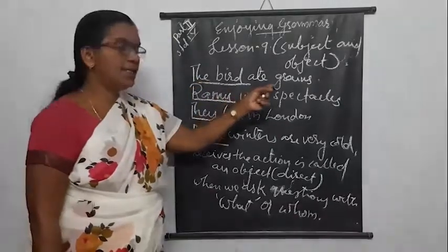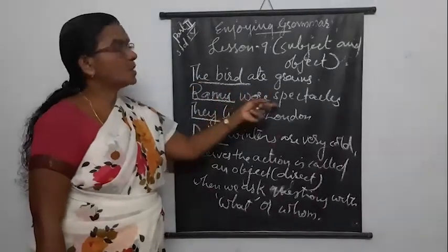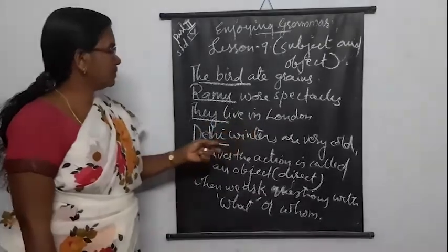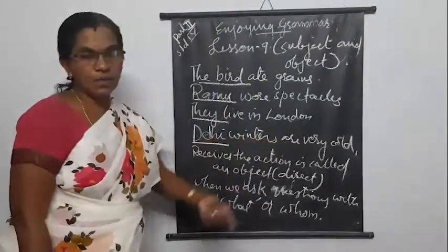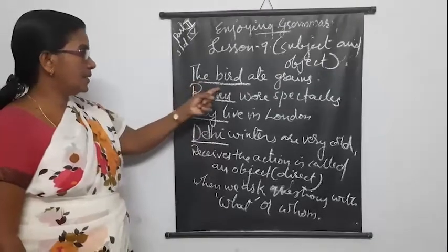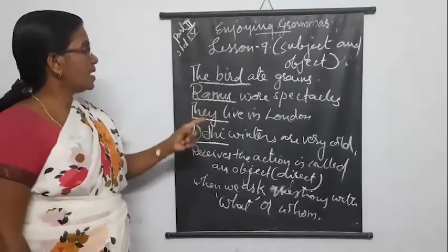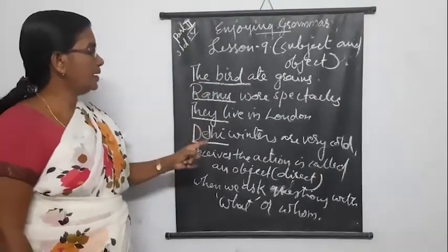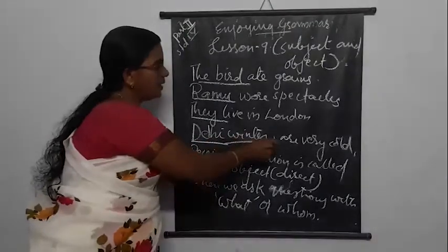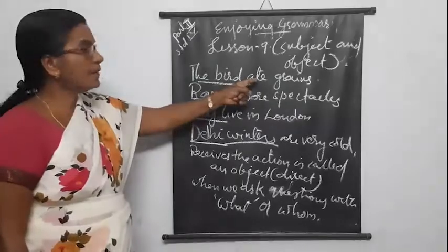The bird ate grains. Ramu wore spectacles. They live in London. Delhi winters are very cold. These sentences have subjects. The underlined words are the subjects. Delhi winters — Delhi winters is the subject noun.